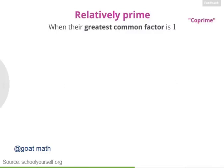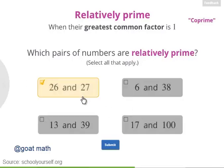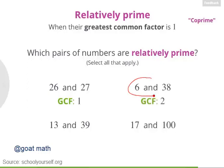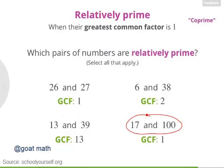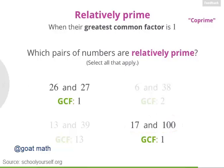Okay, so take a look at these pairs of numbers. Which pairs are relatively prime? Brilliant! So the GCF of 26 and 27 is 1. The GCF of 6 and 38 is 2. The GCF of 13 and 39 is 13 itself, because 13 is a factor of 39. And the GCF of 17 and 100 is 1. So that means the relatively prime pairs here are 26 and 27, and also 17 and 100. Again, nicely done.